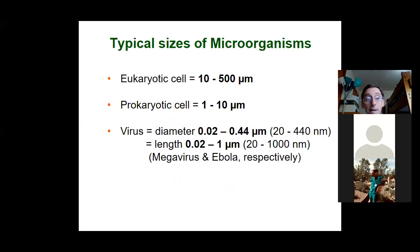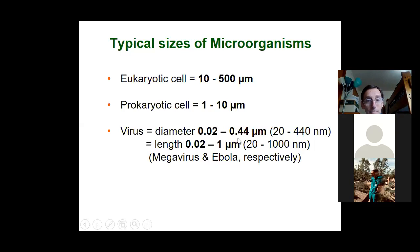You should know the typical size of microorganisms. A eukaryotic cell is about 10 times the size of a prokaryotic cell, which is about 10 times the size of a virus. A virus ranges from about 0.02 to 0.44 micrometers in diameter. The biggest virus by diameter is Megavirus; the biggest virus lengthwise is actually Ebola, which gets to almost one micrometer long, but is less than 0.44 micrometers in diameter because it's long and skinny.